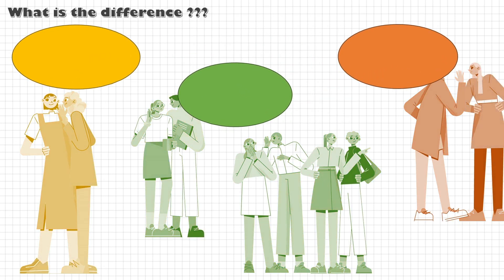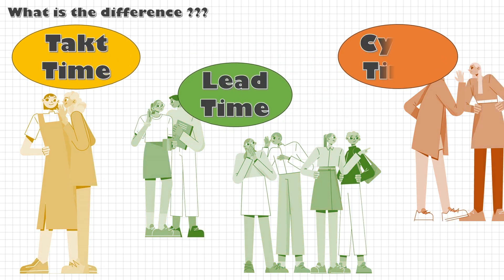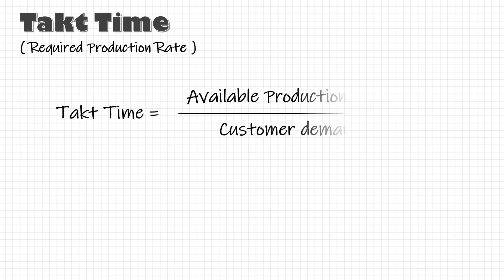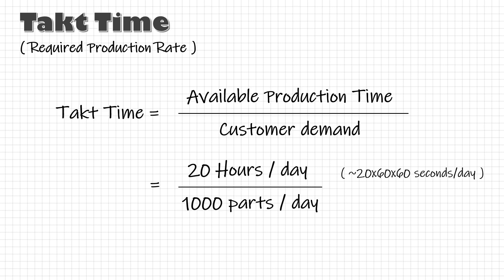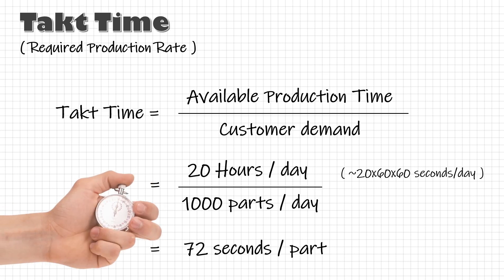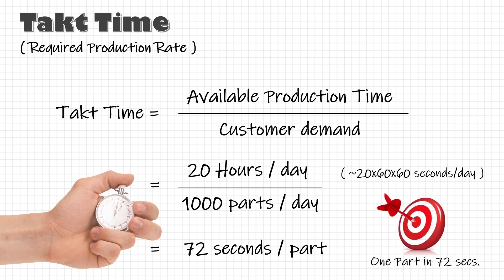Let us start by understanding the difference between these terms which we often use interchangeably. Takt time is the required production rate in order to meet the customer demand. It is calculated by dividing the available production time by the customer demand. For example, if the total available time in a day is 20 hours and the customer needs 1000 parts per day, then the takt time will be 72 seconds. Takt time is a requirement, a target.